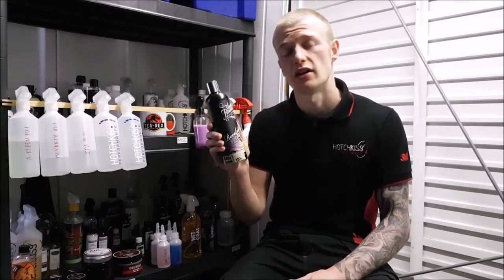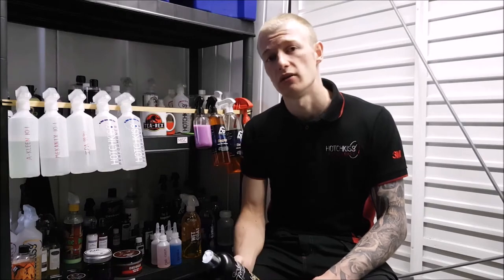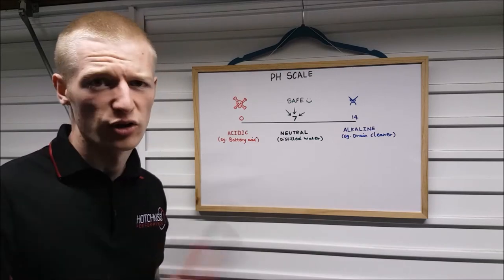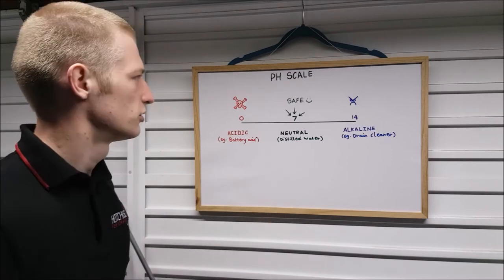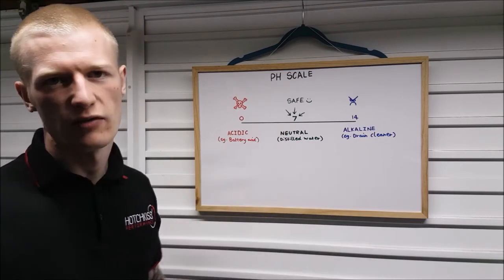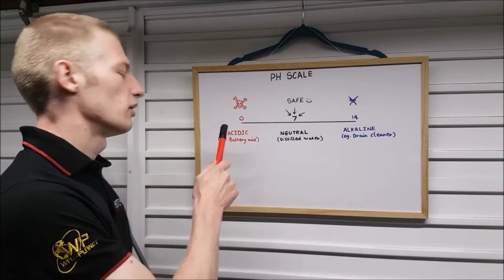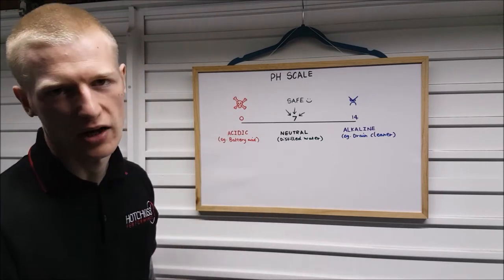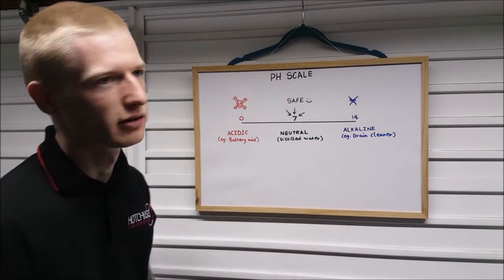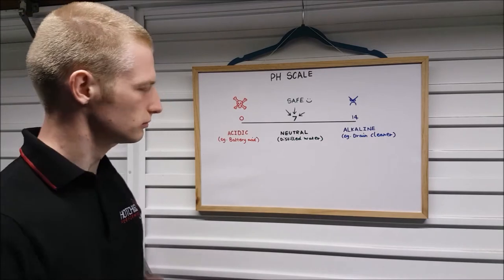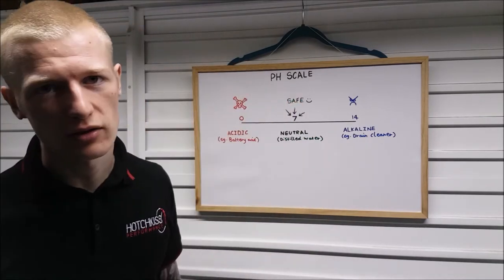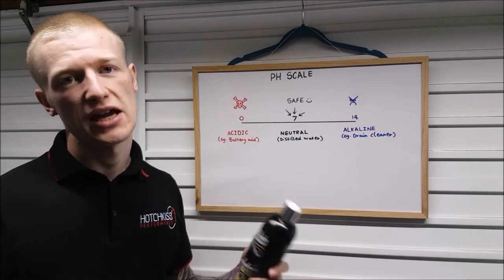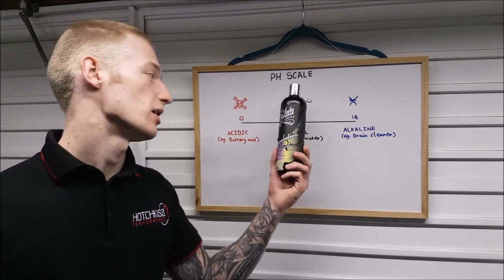These products tend to be pH balanced, which means we have to explain what pH is. Back to secondary school science class — the pH scale: seven is neutral, example distilled water; acidic is zero to six point nine, example in extreme cases battery acid; alkaline is seven point one to fourteen, example drain cleaner. Basically, the closer we are to seven, the safer it's going to be to use on your car.